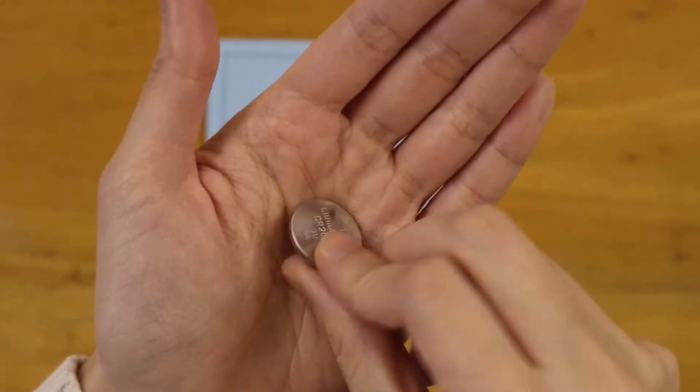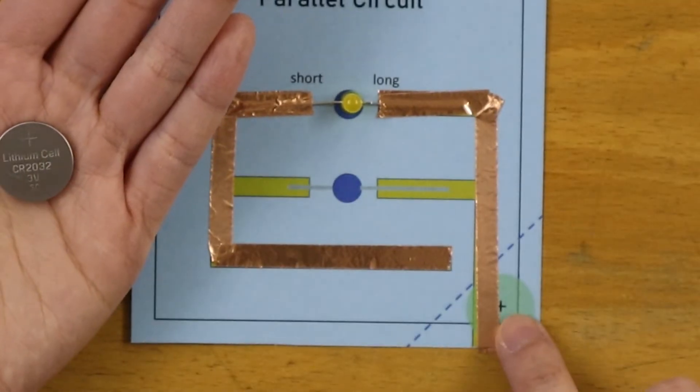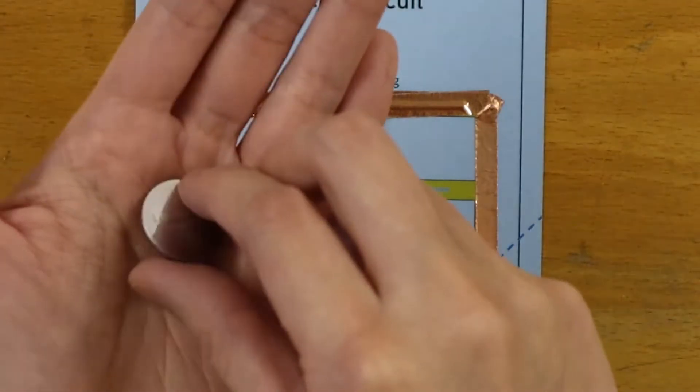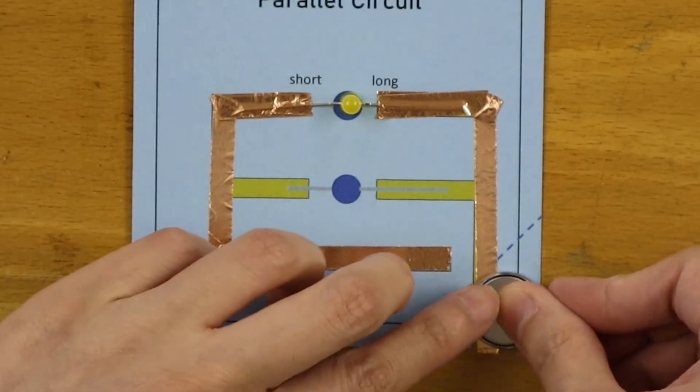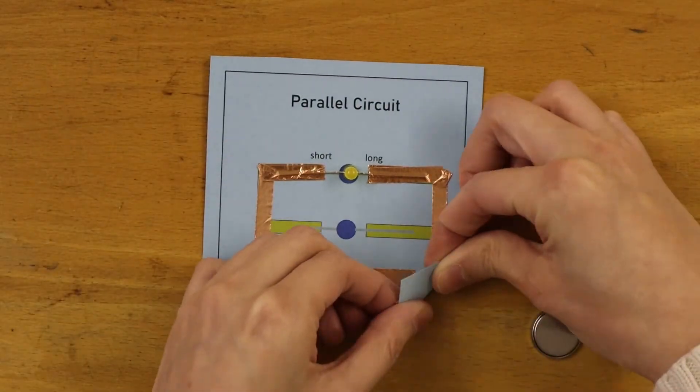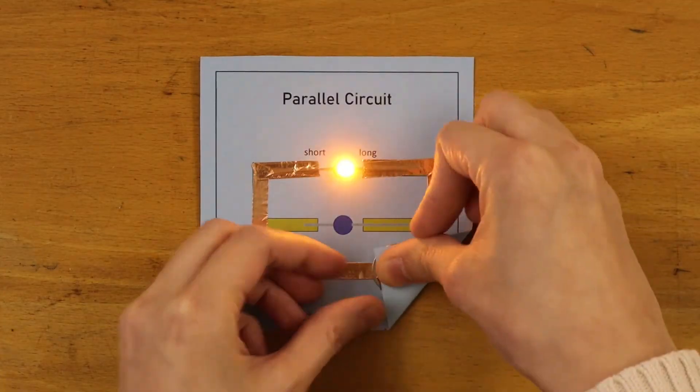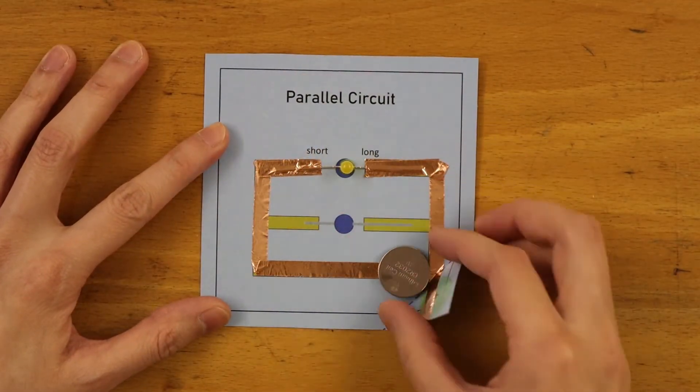The bottom side of my coin battery is the positive terminal. I want this facing down on the card. Once I'm sure the circuit is working properly, stick the battery in place.